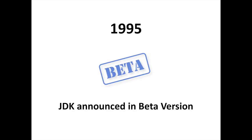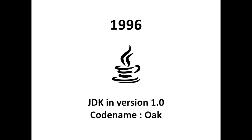On May 23, 1995, John Gage, the director of the science office of Sun Microsystems, along with Marc Andreessen, co-founder and executive vice president at Netscape, announced to an audience at Sun World that Java technology wasn't a myth and that it was going to be incorporated into Netscape Navigator.